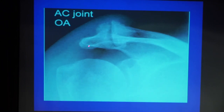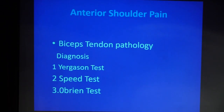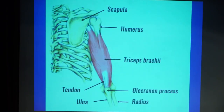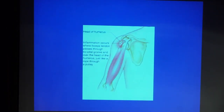If a patient has pain in the anterior part of the shoulder, it is usually something to do with the biceps tendon. There are various tests we do. The main important point is that the pain is in front and you can feel the tenderness. The biceps tendon runs in a tunnel underneath, and it can become irritated and cause pain.